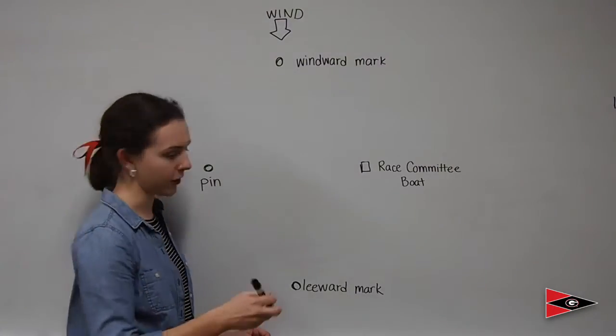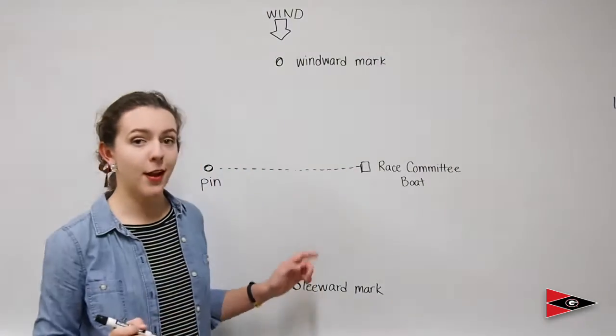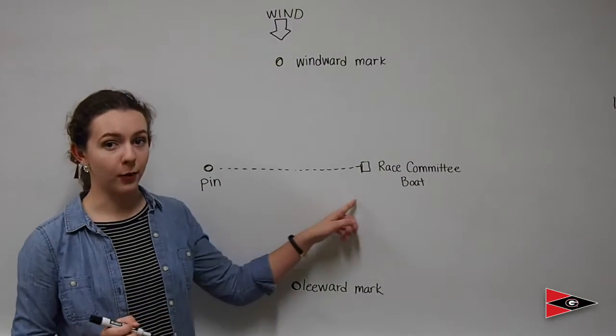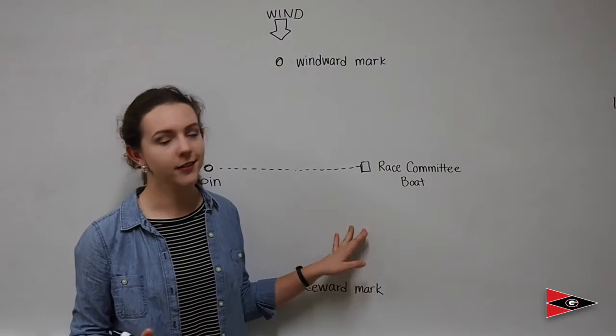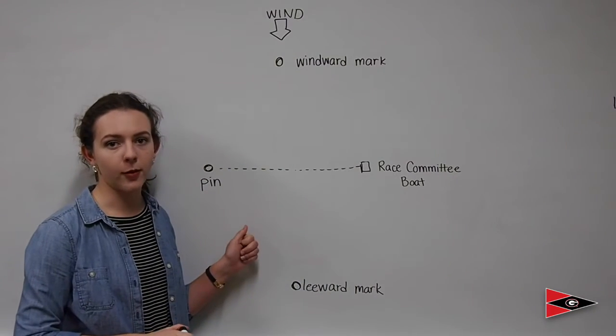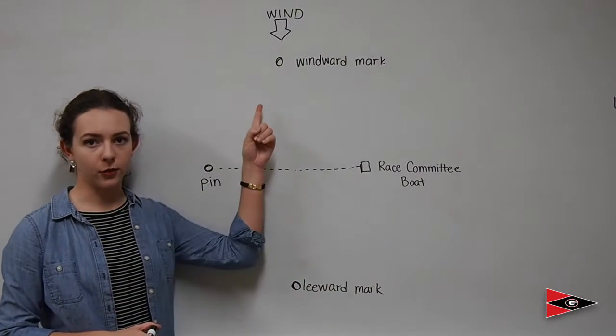Next, let's talk about that starting line. It is an imaginary line drawn between the pin and the race committee boat. You won't see someone spray paint this in the water anywhere. You just have to imagine it. And the race committee will do their best to set this perpendicular to the wind.